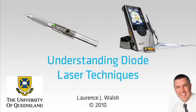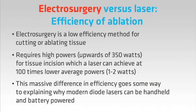Welcome to this short presentation on understanding diode laser techniques. Now that you have a diode laser, you can start to appreciate how efficient this is as a cutting technology. You're probably familiar with electrosurgery, but you probably didn't realise that electrosurgery is a low efficiency method for cutting or ablating tissue. It requires high powers, upwards of 350 watts, to incise into tissue. A diode laser can ablate tissue at 100 times lower average powers, at only a few watts. This massive difference in efficiency helps to explain why a modern diode laser can be handheld and battery powered, and used in your practice as a replacement for many things that you previously would have done with electrosurgery.